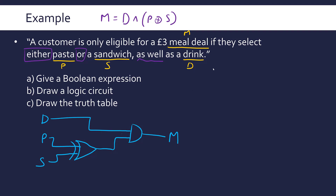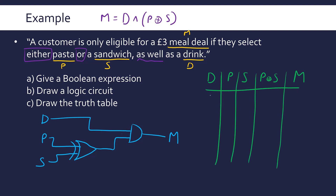For the truth table, our variables are D, P, S, and M as the output. I'll also add an intermediate column for P XOR S. When doing a truth table, make sure you get every combination of inputs — I recommend counting in binary from zero upward. You should have eight rows if you have three inputs, because two to the power of three is eight.